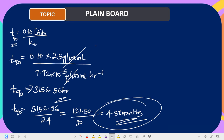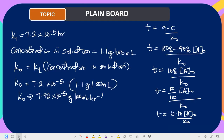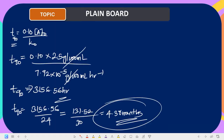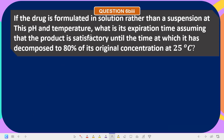The next question asks: if the drug is formulated in solution rather than suspension at this pH, what is the expiration time, assuming the product is satisfactory until it has decomposed to 80 percent of its original concentration at 25°C? If it's in solution, it follows normal first-order reaction kinetics. The first-order equation is t = 2.303/k × log(C0/C).